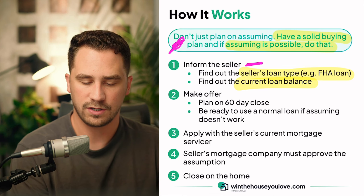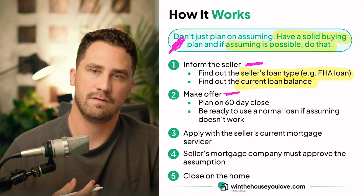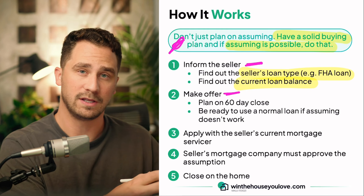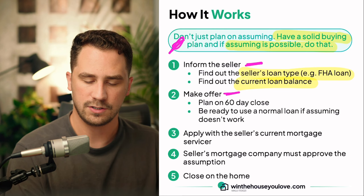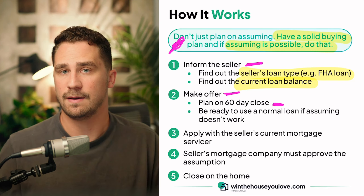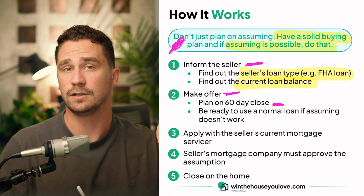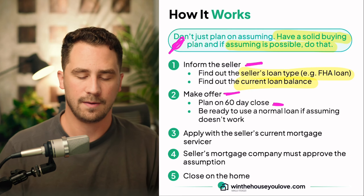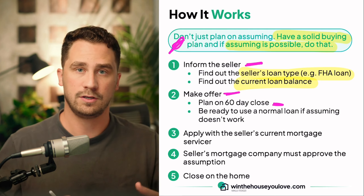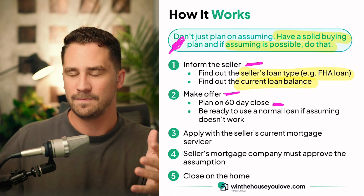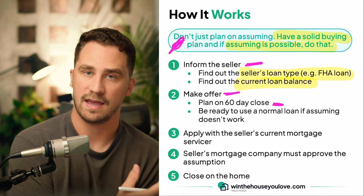Then go ahead and make an offer on the home. If you're planning on an assumption — say it's an FHA loan with a really low rate and the spread between the balance and the purchase price isn't too big — plan on a 60-day close. That means you get under contract and you're not planning on closing for 60 days, because a loan assumption can take longer than a regular purchase. Mortgage companies don't really make a lot of money on assumptions, so they don't have huge departments staffed for them and it can take longer to get through the process. Expect a 60-day close and have that in the contract.